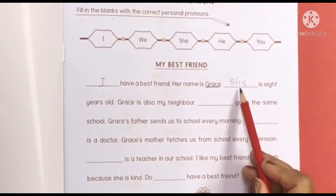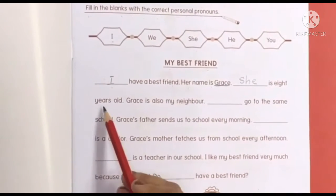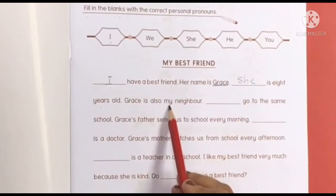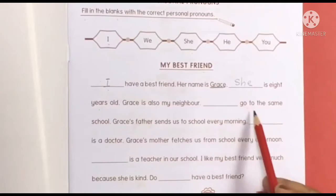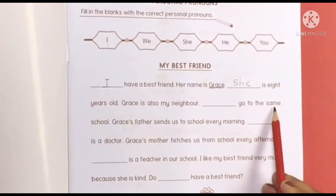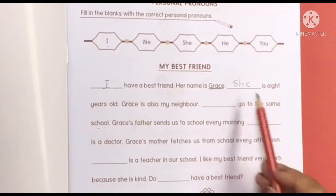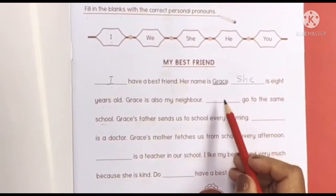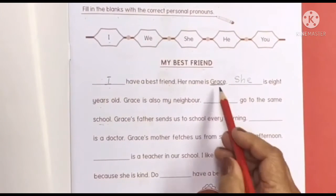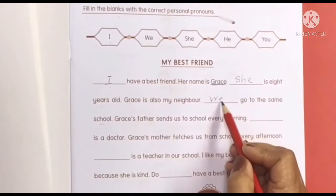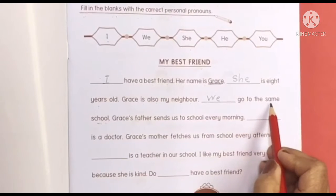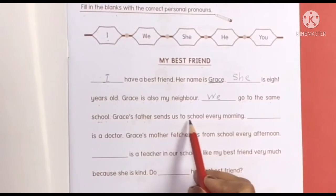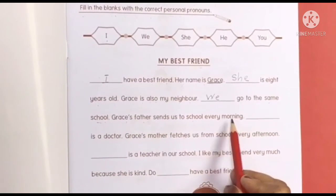So, 'She is eight years old. Grace is also my neighbor.' Then: 'Grace and you go to the same school.' Meaning Grace and you go to the same school. So what is the personal pronoun? You and your friend — 'We.' Very good. 'We go to the same school. Grace's father sends us to school every morning.'